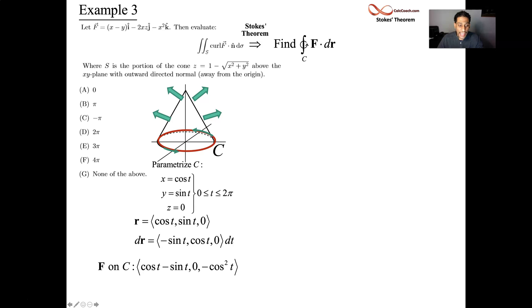So then this is what we dot. F and dr will get negative cosine t sine t plus sine squared t. And then the other two parts zero out. There's a zero in the j component of F. And there's a zero in the k component of dr. So when we dot them, we just get the i component multiplication.